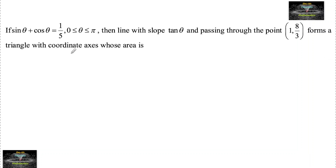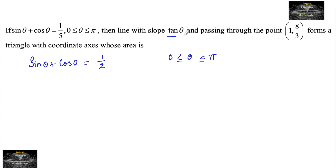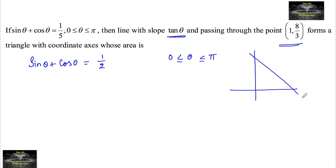If sin θ plus cos θ is equal to 1/5, and 0 ≤ θ ≤ π, a line with slope tan θ passing through the point (1, 8/3) forms a triangle with the coordinate axes. We need to find the area of that triangle.